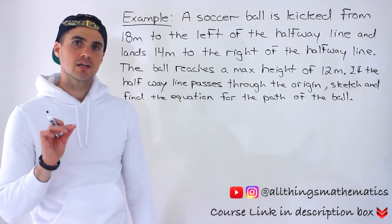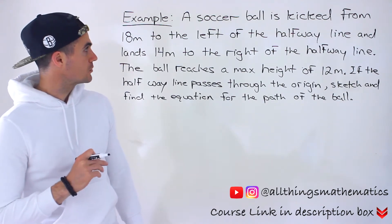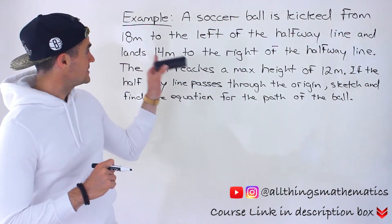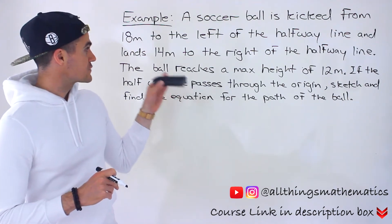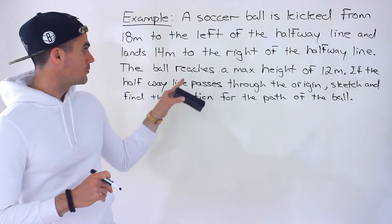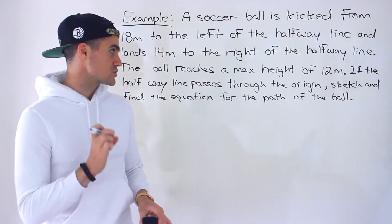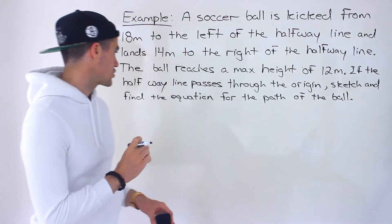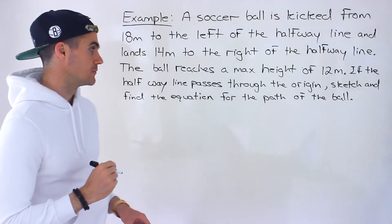Moving on to another question dealing with factored form quadratics. So this is a word problem. We're told a soccer ball is kicked from 18 meters to the left of the halfway line and lands 14 meters to the right of the halfway line. The ball reaches a max height of 12 meters. If the halfway line passes through the origin, sketch and find the equation for the path of the ball.